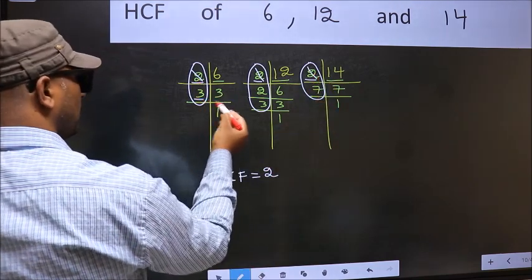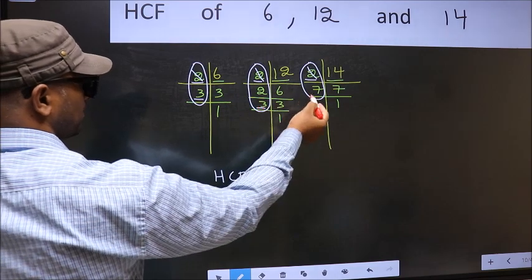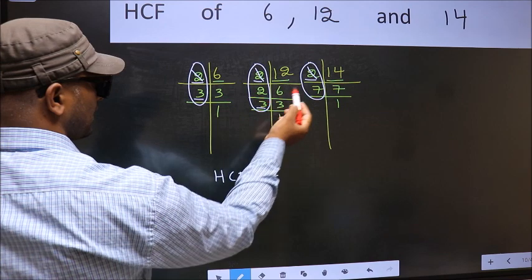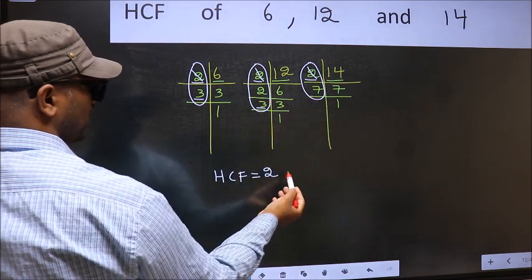Next number 3. Do we have 3 here? Yes. Go to the next place. Do we have 3 here? No. 3 is not present in all the 3 places, so we cannot write here.